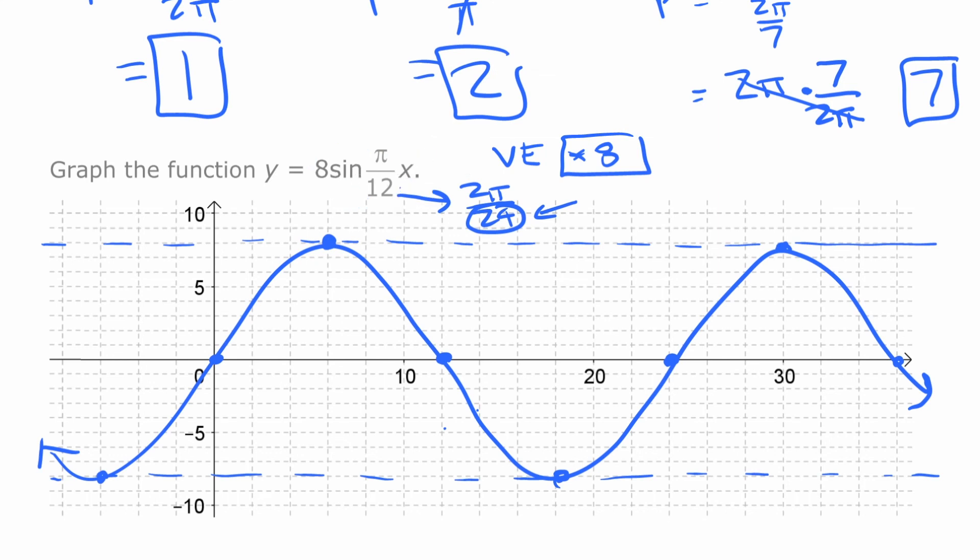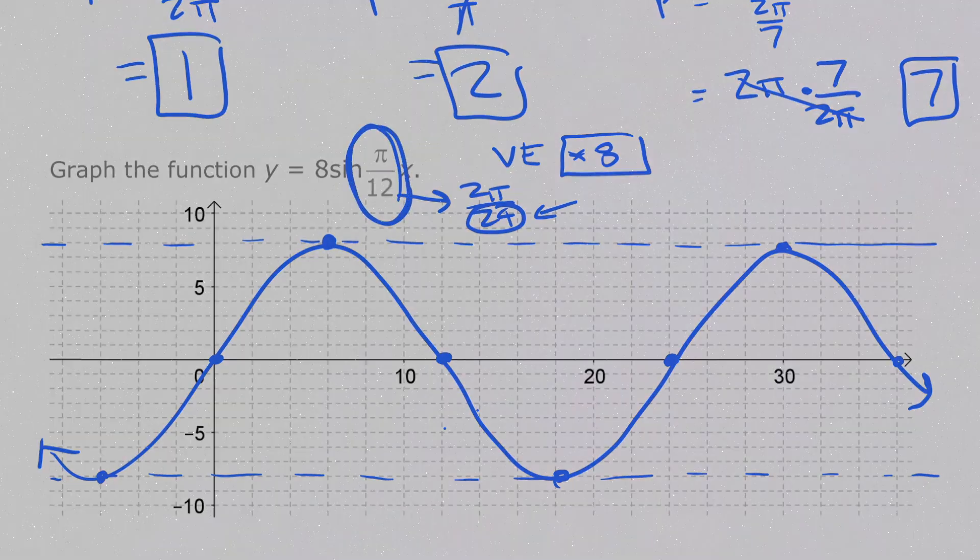Alright, so that's a look at changing the period such that it's a rational number, and what the b value has to be to make that happen.